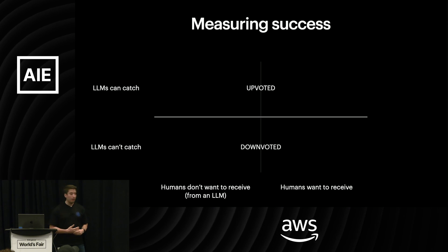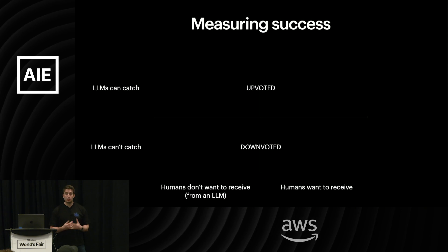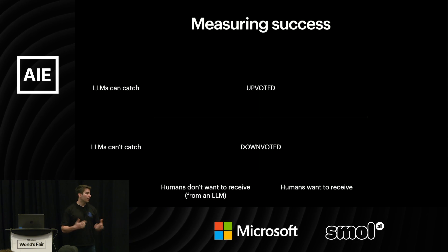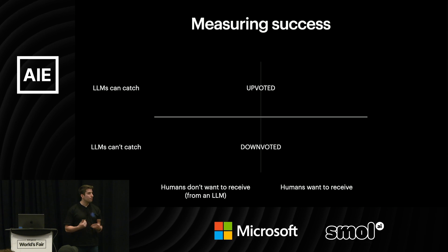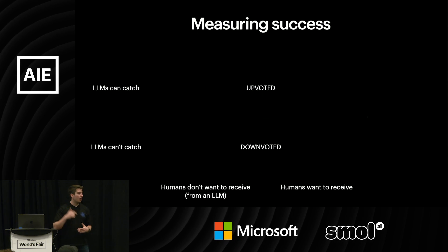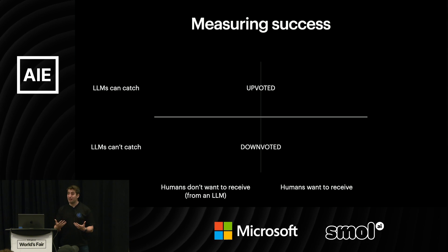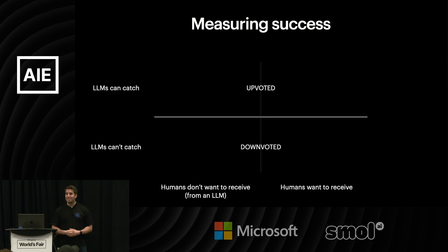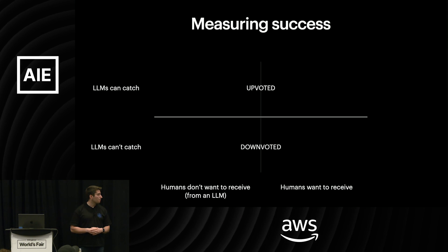The first axis was easy for us — thinking around what LLMs can and can't catch. What we started to do was add upvotes and downvotes to the product, letting you emoji-react on comments. They pretty much tell us when the LLM is hallucinating. When we start to see a downvote spike, we know we might be trying to extend things beyond its capabilities and we need to tone it down.